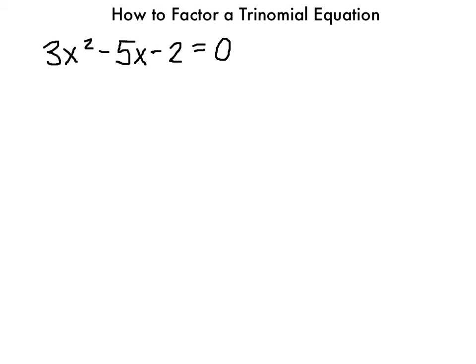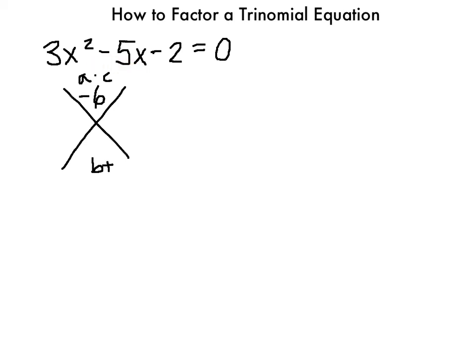To get started, I'm going to focus on just the part of the equation that equals 0. Using the X-factor, I write a times c on the top. A times c gives me negative 6. My b value goes on the bottom, and that's going to be negative 5. So I have to figure out what two numbers multiply to get negative 6 and add to get negative 5.